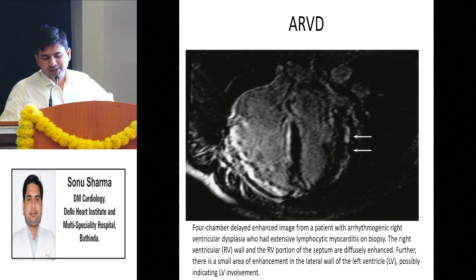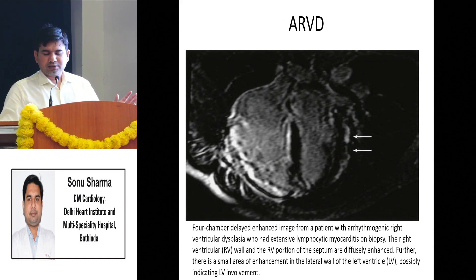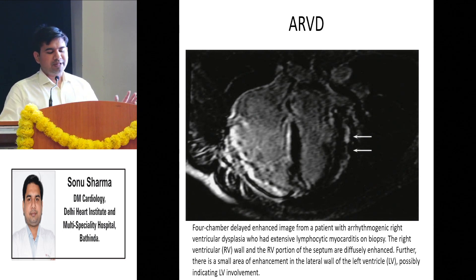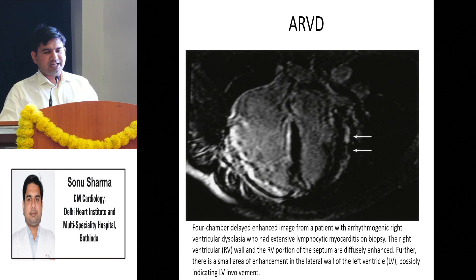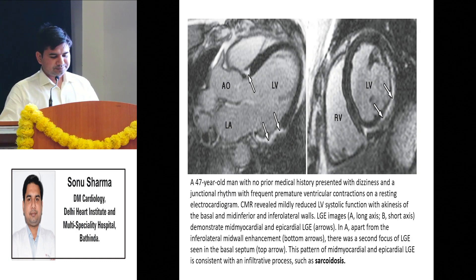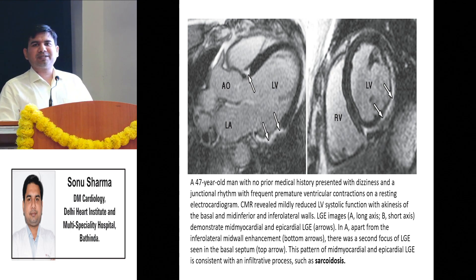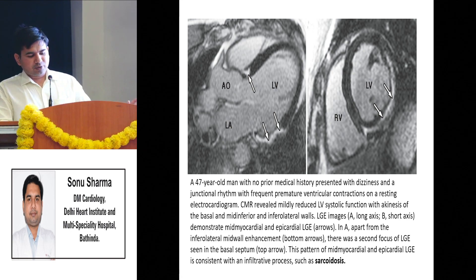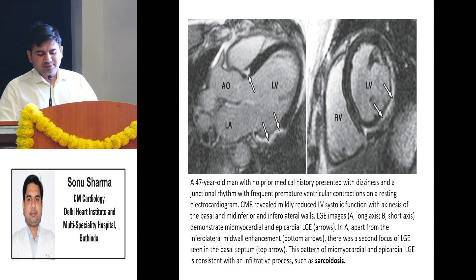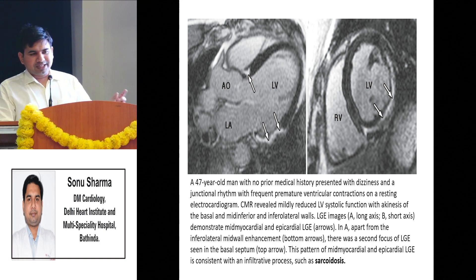MRI is particularly useful when a young patient presents with palpitations and ECG shows VPCs originating from the RV - to determine if these are benign or malignant. Malignant means the patient is suffering from ARVC/D, a cardiomyopathy which can cause death within 5 years of diagnosis. MRI is very useful in young patients with frequent VPCs to diagnose ARVC/D, where the treatment is ICD placement. Similarly, a young patient presenting with complete heart block - treatment is usually a pacemaker, but if MRI shows late gadolinium enhancement supporting sarcoidosis, we must treat the sarcoidosis.